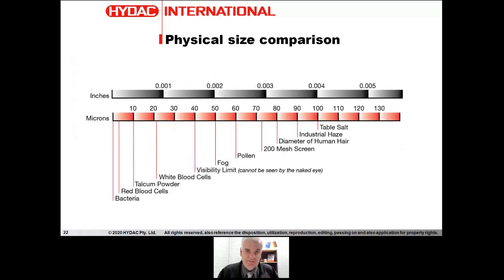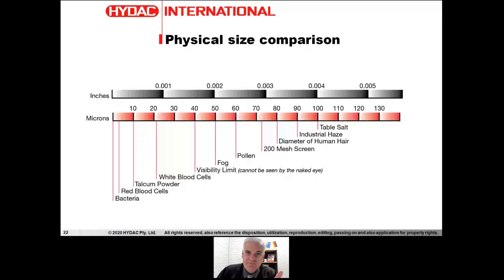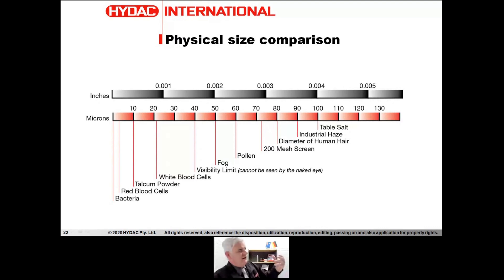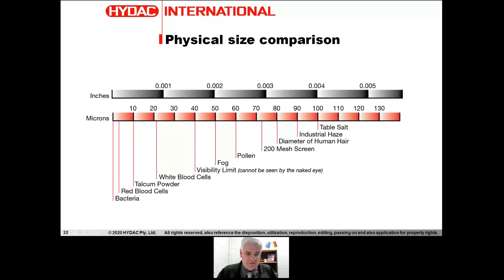We can't ignore the physical size of contaminants. This chart from a HIDAC catalogue from the USA shows that the visibility limit is around 50 microns — and that's for someone with perfect vision. Anything under that you can't see with the naked eye; you'd need a microscope. Yet 50 microns is a massive size contaminant for these systems. If I asked what size filters you use, people typically say 10 microns — that's one fifth of what you can see. So you can hold up a sample of fluid, think it looks clean, and be completely wrong.